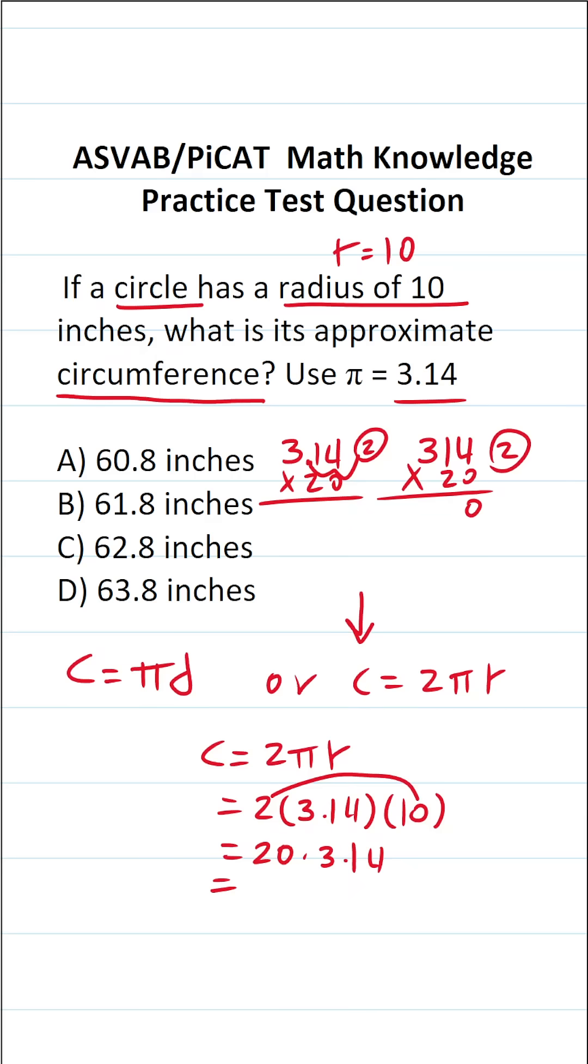0 times 4 is 0, 1 times 0 is 0, 3 times 0 is 0. Before we start multiplication with this 2, we have to bring in a 0 placeholder. 2 times 4 is 8, 2 times 1 is 2, 2 times 3 is 6. Let's add this all up: 0, 8, 2, 6. Bring in our two decimals.